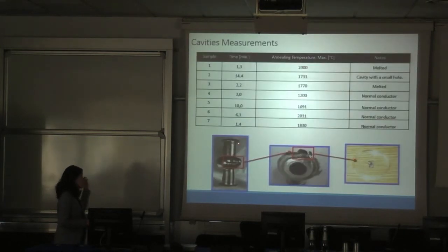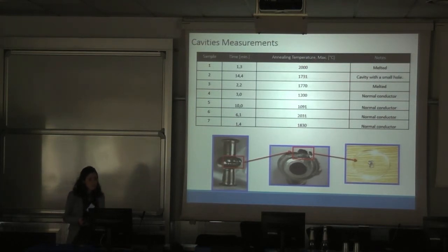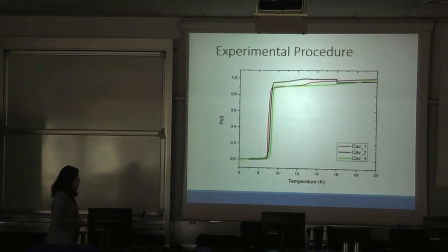Our results were not satisfactory, because first of all we melted the cavity, we destroyed it. And the cavities that we performed the heat treatments, we measured, they were normal conductors. This is our temperature, the maximum temperature that we can measure. However, we find it difficult to set or control the temperature when we change the voltage and time.